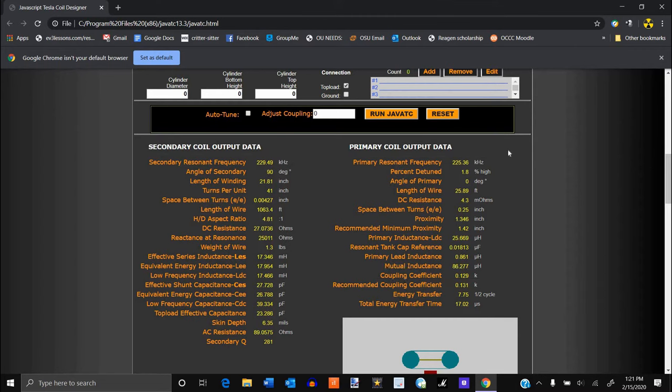A coupling coefficient of greater than 0.2 means the two coils are too close together and they arc over to one another. Fiddle around with these values until you get them the way you like, then move on to the build phase of your Tesla coil.